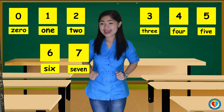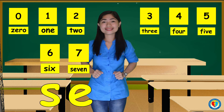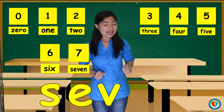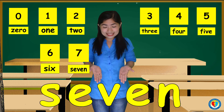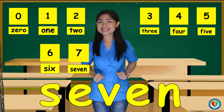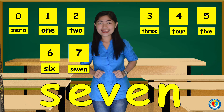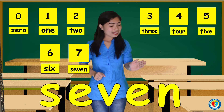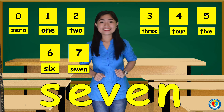For the number 7, we have S, E, V, E, N. Seven. Again, kids. S, E, V, E, N. Seven.